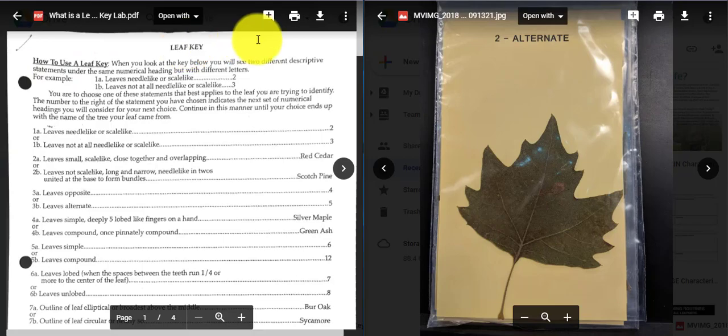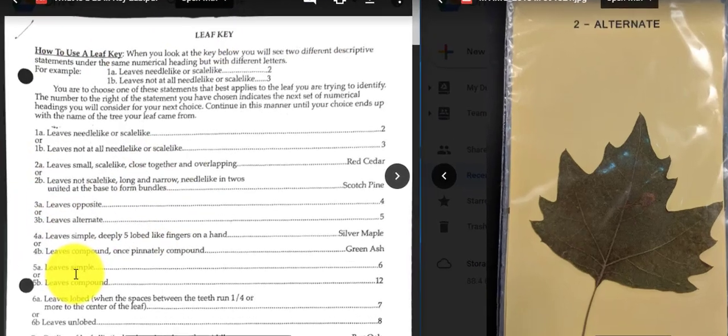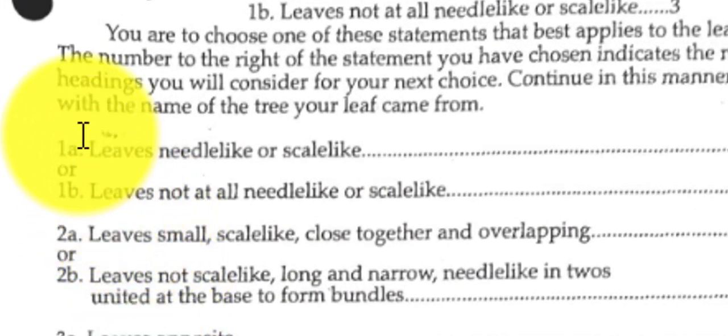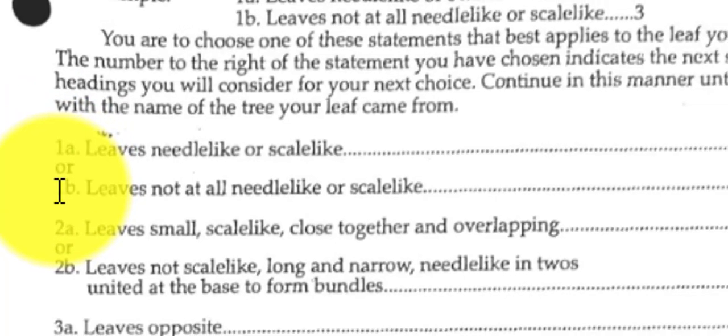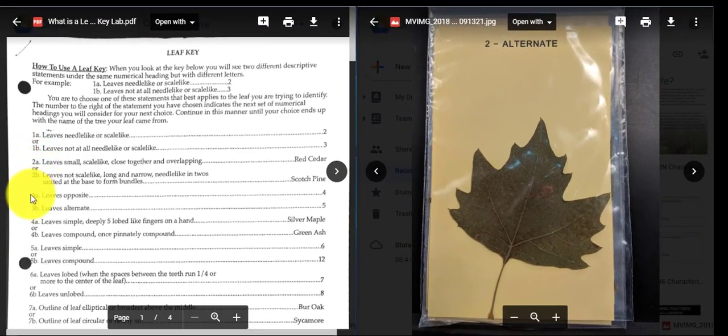So if you take a look to the left here, this is what you call a dichotomous key. Di means two, so if you notice that each statement here comes in pairs of two. These are called couplets, so you have 1a or 1b, 2a or 2b, 3a or 3b, 4a and 4b, and so forth.